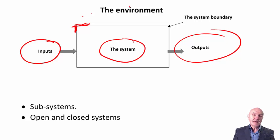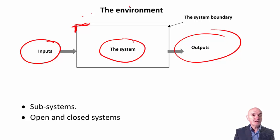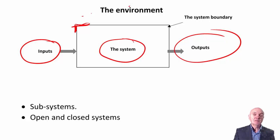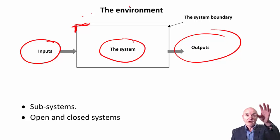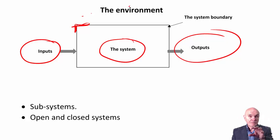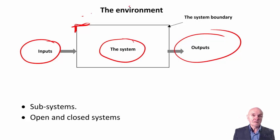Even within receivables, you might be able to break that down further. There might be a part of the system — another subsystem — which looks after accepting new customers and getting credit references. Another subsystem could be invoices, and another subsystem could be chasing up payments which are very slow. So within the accounting department, the receivables department breaks down into three or more subsystems.